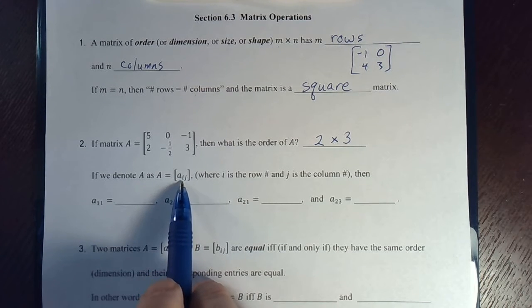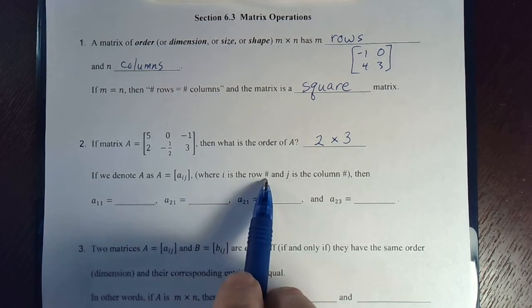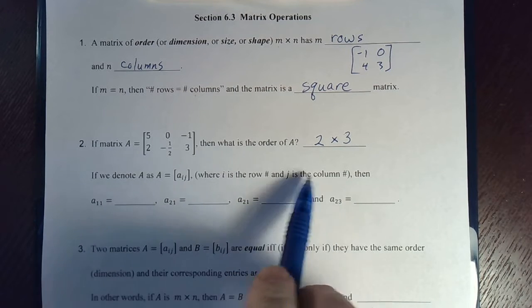Where a one one would be the element in row one, column one. i is the row number, j is the column number. Remember, row goes first, then columns.